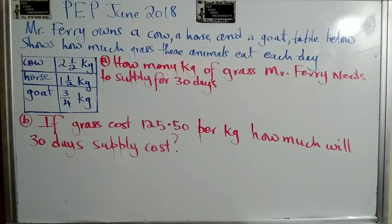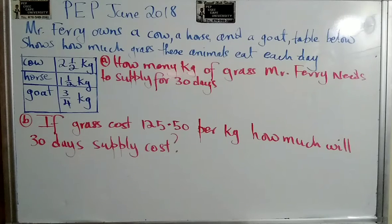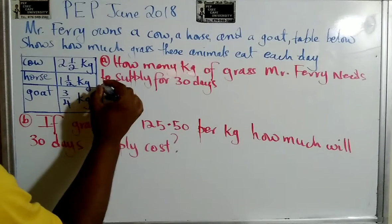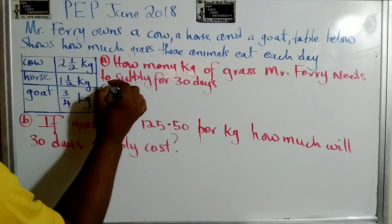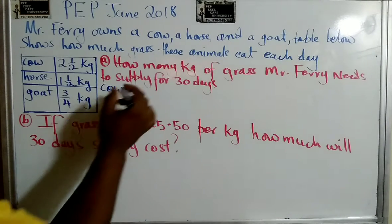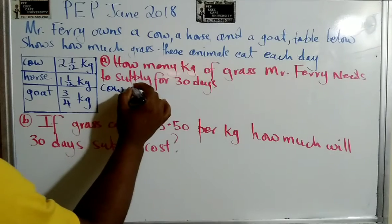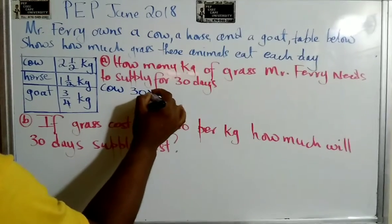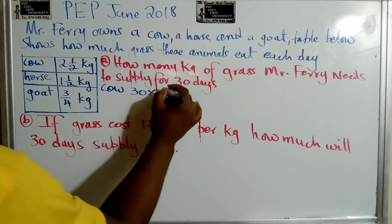So what they're saying is how much grass the cow, the horse, and the goat eat in 30 days. So let's examine that. We could look at each individually. The cow is going to eat two and a half kilograms per day for 30 days, so that's 30 times two and a half.